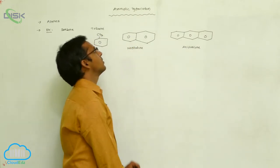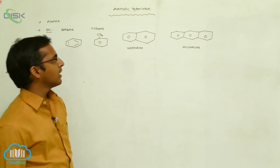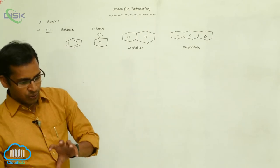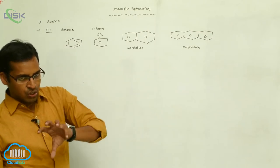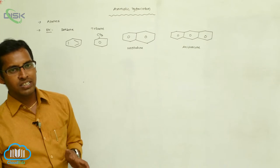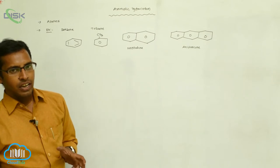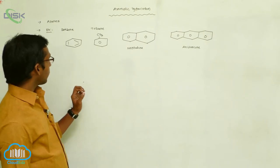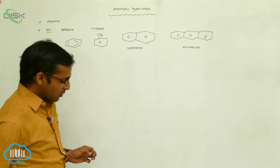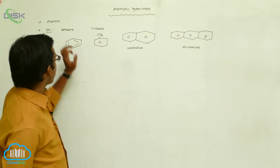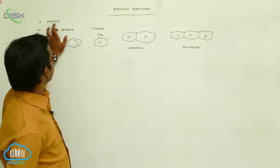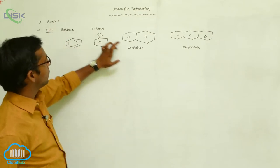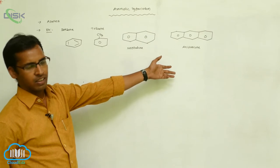These are your aromatic hydrocarbons. Aromatic hydrocarbon means continuous conjugation is present between the carbon and carbon. These aromatic hydrocarbons are called arenes. Examples are benzene, toluene, naphthalene, and anthracene.